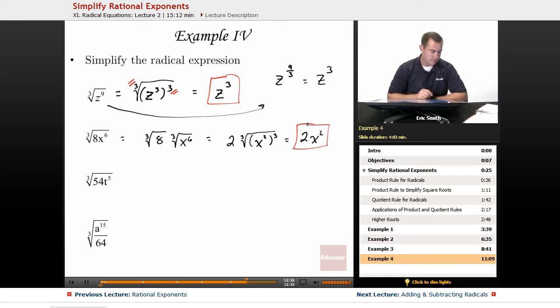All right, continuing on, I have the cubed root of 54, t to the fifth. Now this one I'll try and break down as much as possible, but remember, if we have things that are still not cubic, we'll have to leave them underneath the root.